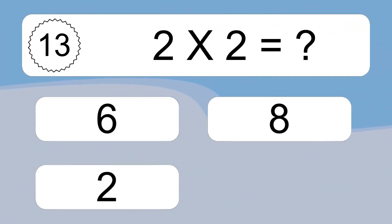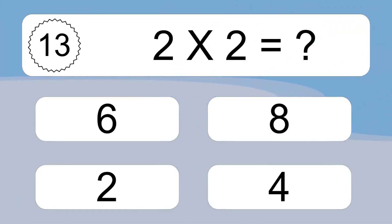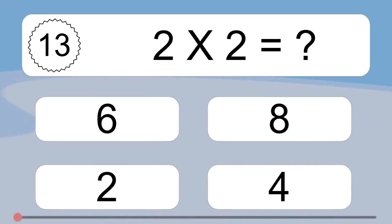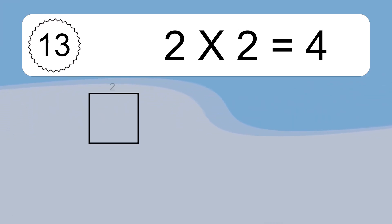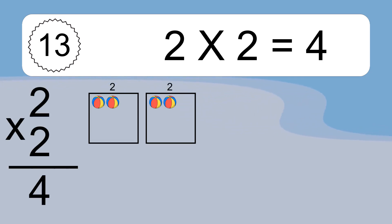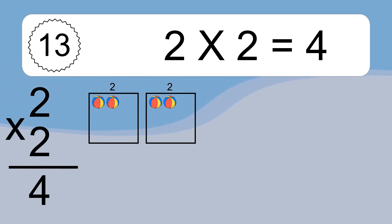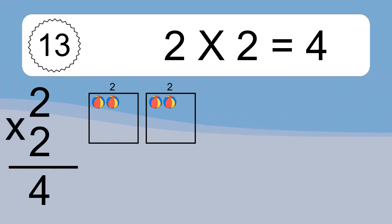2 times 2 equals what? 2 times 2 equals 4.